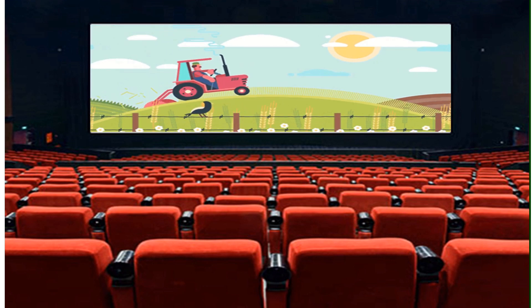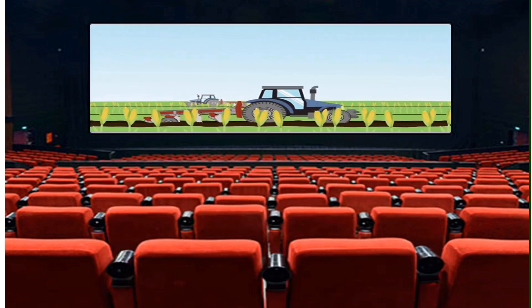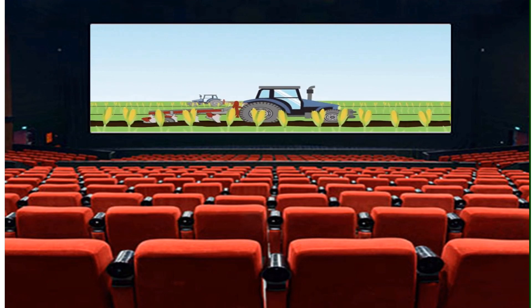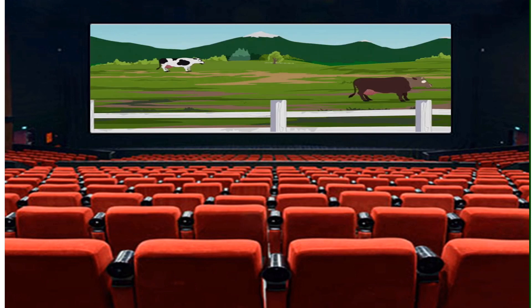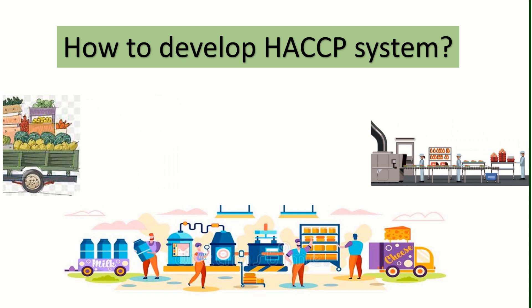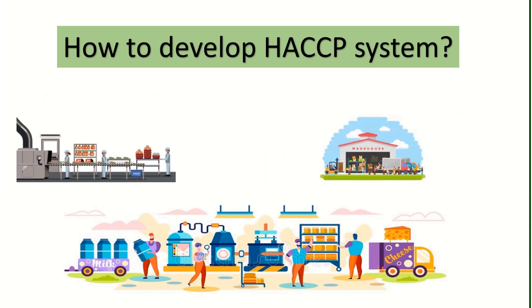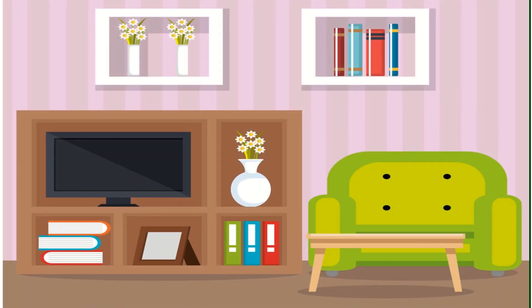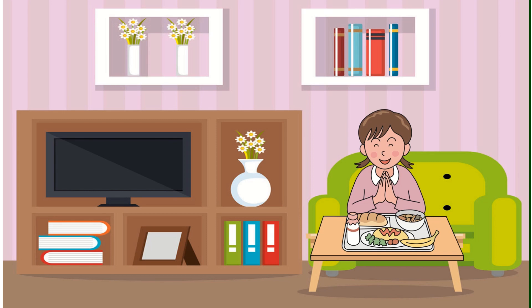HACCP is a systematic preventive approach towards food safety, applicable to a complete food chain from farm to fork. It addresses hazards as a means of prevention rather than final product inspection. HACCP ensures food safety and has 12 steps including 7 principles. We have already completed the initial 5 steps in our previous video. The next 2 steps — Principle No. 1 and Principle No. 2 — are the most technical and difficult steps of HACCP.